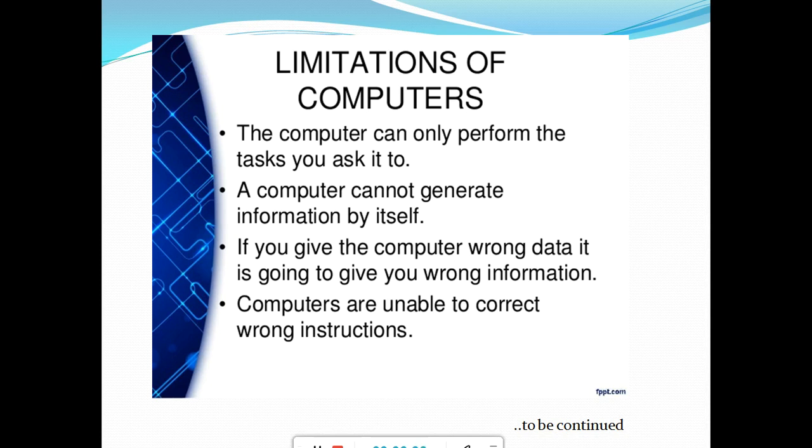Accordingly, the computer will take the input, process the input, and show you the output. It cannot think by itself. If you give the computer wrong data, it is going to give you wrong information. So it depends on human beings what we are giving to the computer. If you are giving correct data, the computer will work on it and give you 100% results. But it is not able to correct wrong instructions. Like here, see this last line: Computers are unable to correct the wrong instruction.